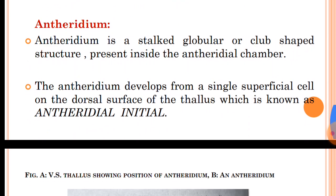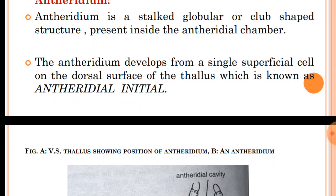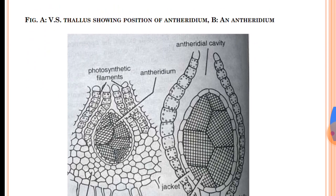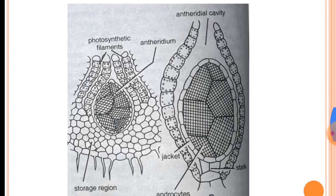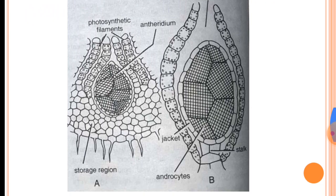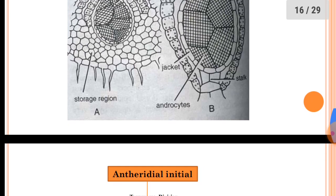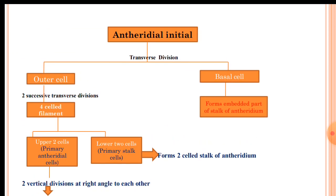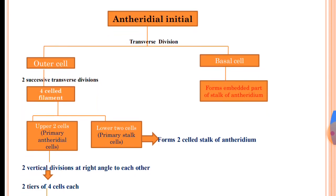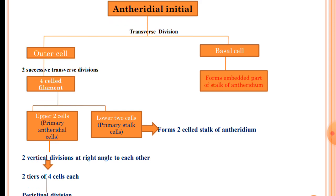The antheridium is the male reproductive organ. It is a stalked globular or club-shaped structure present inside the antheridial chamber. The antheridium develops from a single superficial cell on the dorsal surface of the thallus, known as the antheridial initial. The antheridial initial divides by a transverse division forming an outer cell and a basal cell. The basal cell forms the embedded part of the stalk of the antheridium.